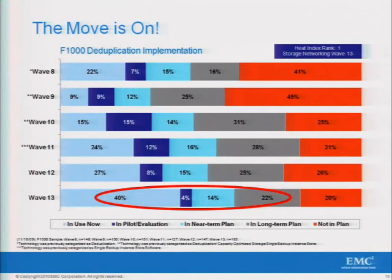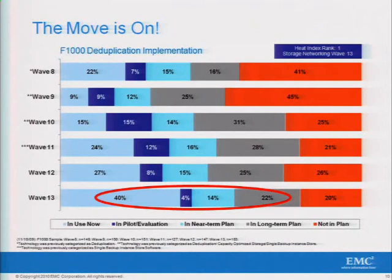Many of you in this room might in fact be doing some sort of deduplication in your environment today. When I started four years ago — I joined Data Domain a little over four years ago in New York City — every meeting I went to, people were like, 'dedupe what?' People didn't have any understanding of what this was. Now in 2010, 80% of the Fortune 1000 businesses surveyed are either using deduplication now, or have it in their near or long-term plan, or are actively in evaluation. You can see this wave of adoption. This is mature technology — it's no longer something that needs to be proven, particularly when you look at the EMC portfolio with Avamar and Data Domain products.